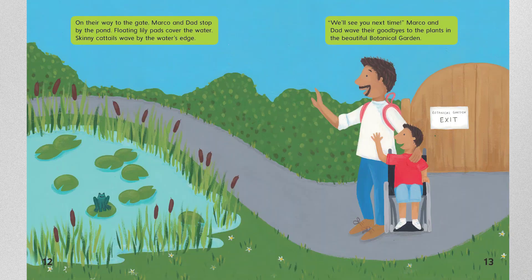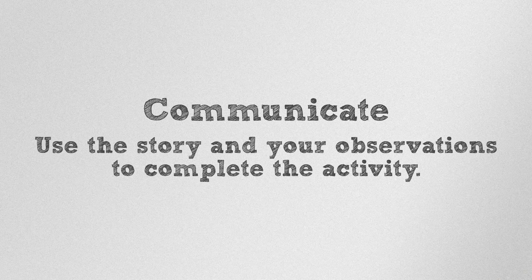On their way to the gate, Marco and Dad stop by the pond. Floating lily pads cover the water. Skinny cattails wave above the water's edge. Marco and Dad wave their goodbyes to the plants in the beautiful botanical garden. Next, use what you've learned from the story and your observations during the investigation to complete the rest of the activity.